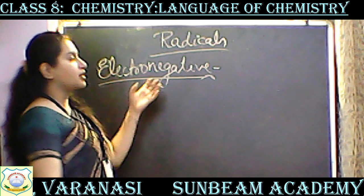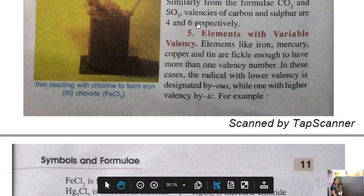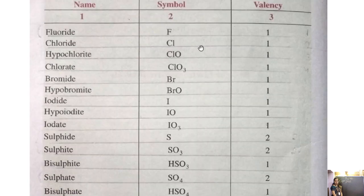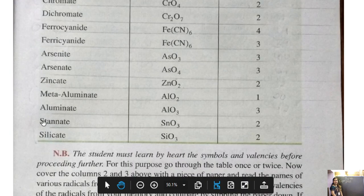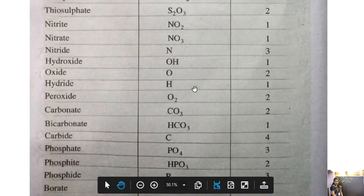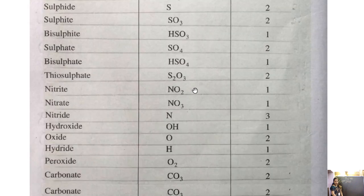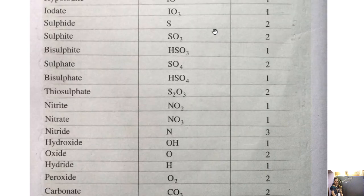Now coming back to electronegative and electropositive radicals — let me show you the table again. You can see in your book that maximum radicals are electronegative in nature and they are given different names. Let's take some examples from here — let's talk about sulfate, sulfite, and sulfide, and also bisulfite and bisulfate. Let's talk about this whole family.